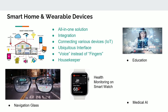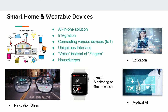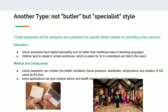Next, we will introduce the applications of IVAs in some specific scenarios. Returning to smart home and wearable devices: IVAs, Intelligent Virtual Assistants, are implemented in large-scale scenarios such as smart home, vehicles, or subdivided specialized fields like education and medical fields. With IVAs, users need not operate their devices by eyes and hands, but simply by voice. Rather than a traditional tool, IVAs are more like a consultant or expert who provides information, suggestions, and even solves problems for you. Virtual assistants will be designed and optimized for specific fields instead of controlling many devices.